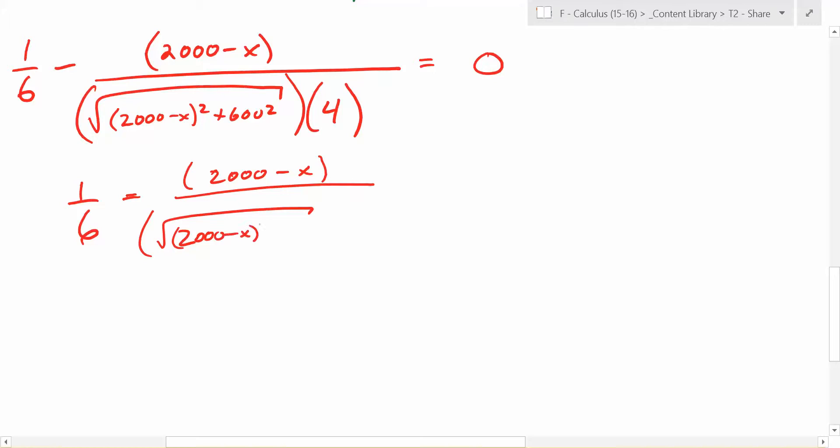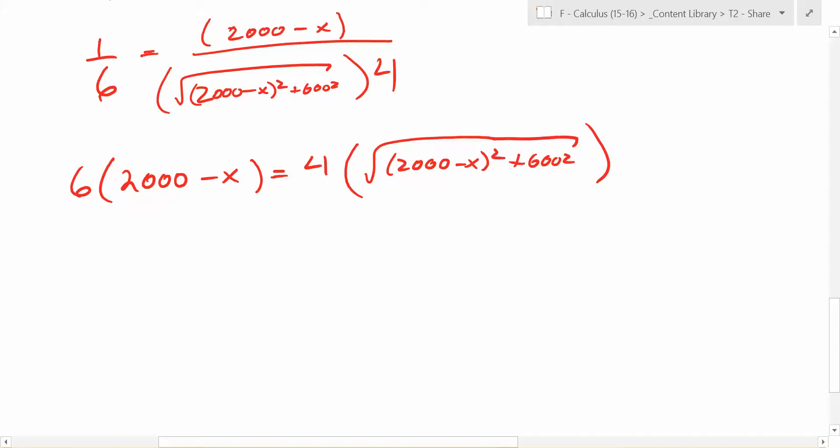Is equal to what? 2,000 minus X all over this thing, right? What happens if you miss a zero? Oh, everything's sad. Times what? Four. Now what should I do? I have a fraction equaling a fraction. What should I do, Zach? Yeah. So I end up with six times 2,000 minus X is equal to four times the square root of 2,000 minus X squared plus 600 squared. What's something nice and simple we could do? You could divide by four, make a fraction, but let's just divide by two. Why do I like dividing by two instead of four at this point? What do I get to avoid?